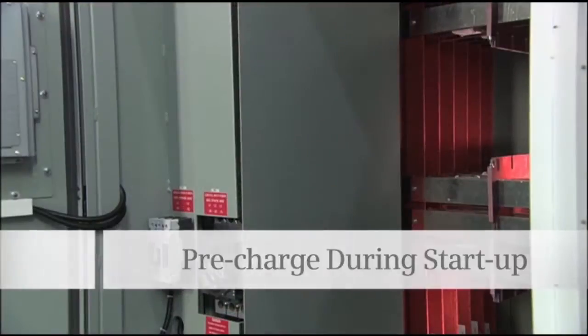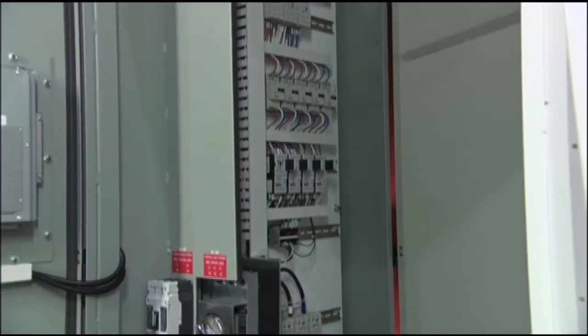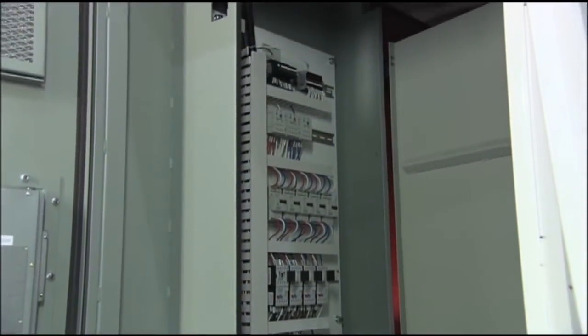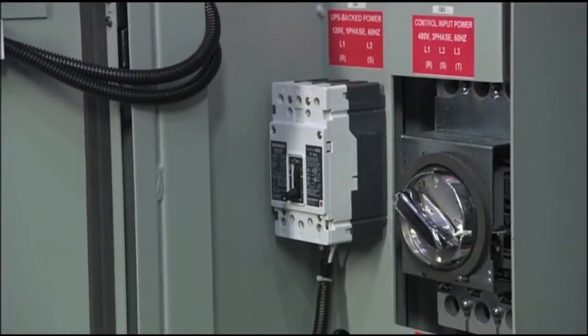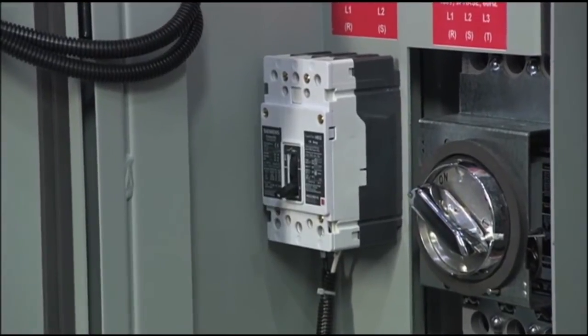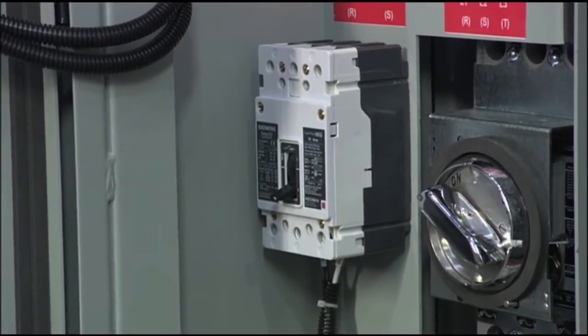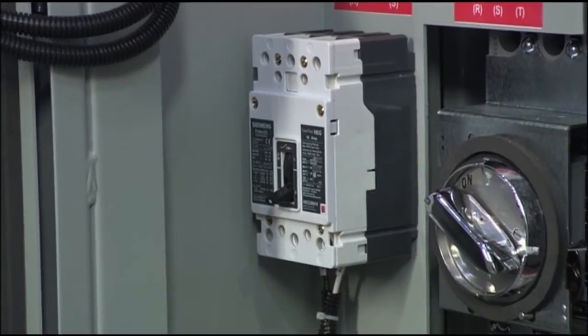The auxiliary circuit breaker protects the control cabinet electronics. This is where customers can connect the uninterruptible power supply or UPS, a popular option on the GH180 liquid cooled drive.